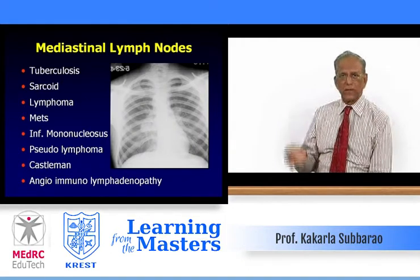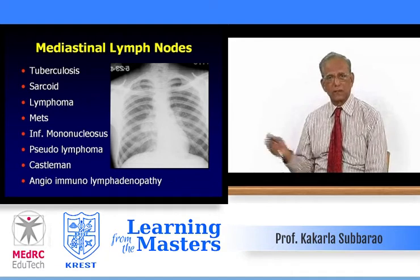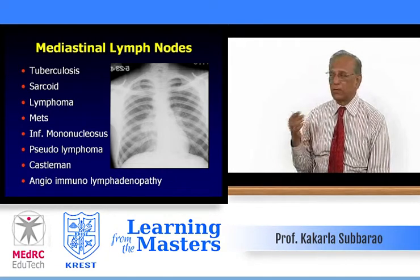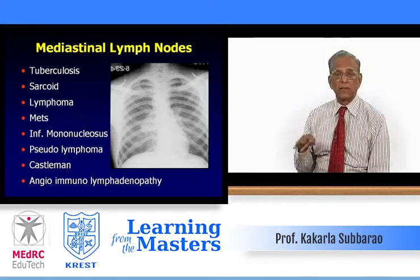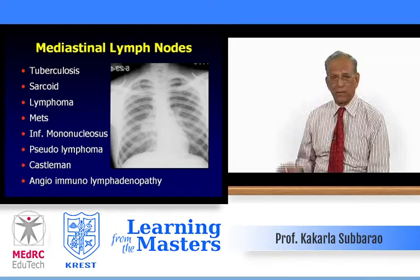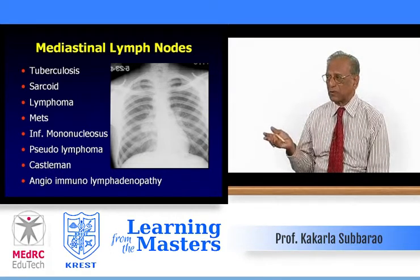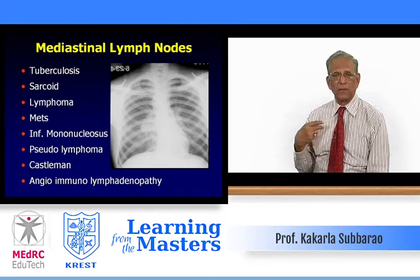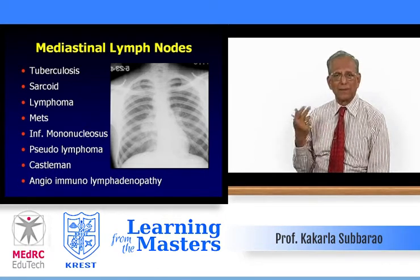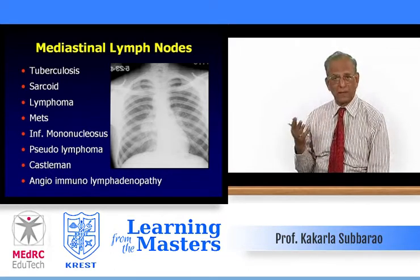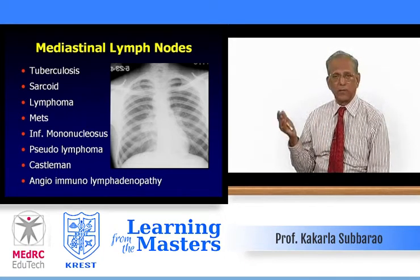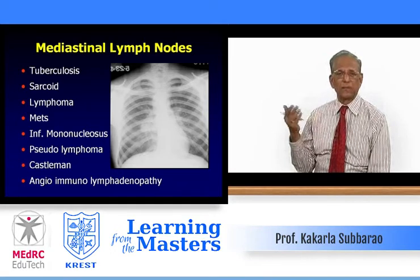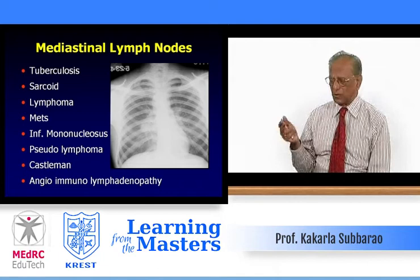What is the differential diagnosis when mediastinal lymph nodes are enlarged? About 90% of the time it is tuberculosis, then rarely sarcoidosis and lymphoma. You also have to consider massive nodal metastasis, infectious mononucleosis, pseudo-lymphoma — the patient may be on anti-epileptic drugs like phenytoin or other drugs and get pseudo-lymphoma. Castleman's disease is rare but can cause lymph nodal enlargement, as can angio-immunoblastic lymphadenopathy, which requires biopsy to prove.